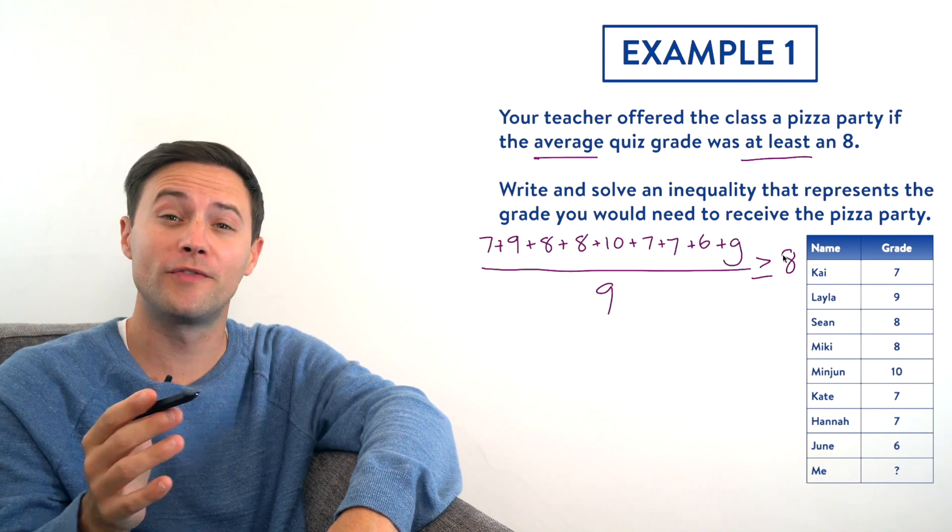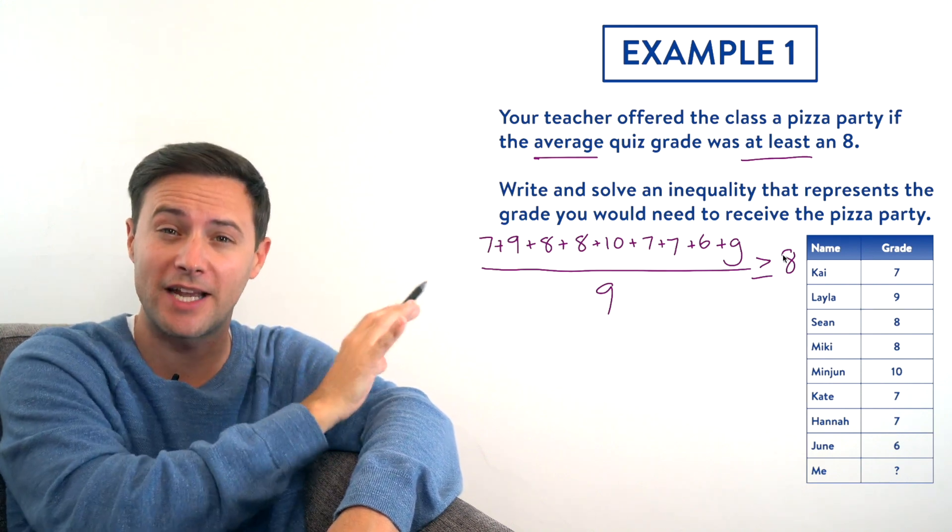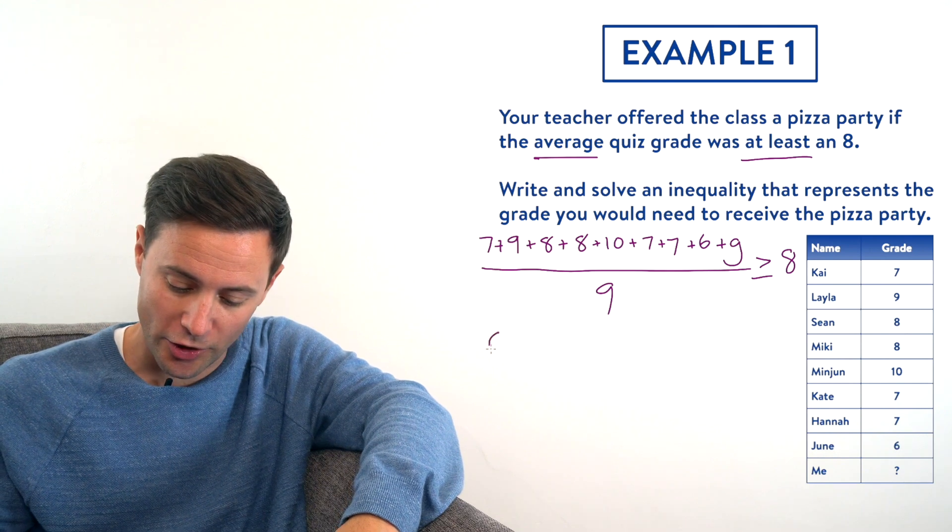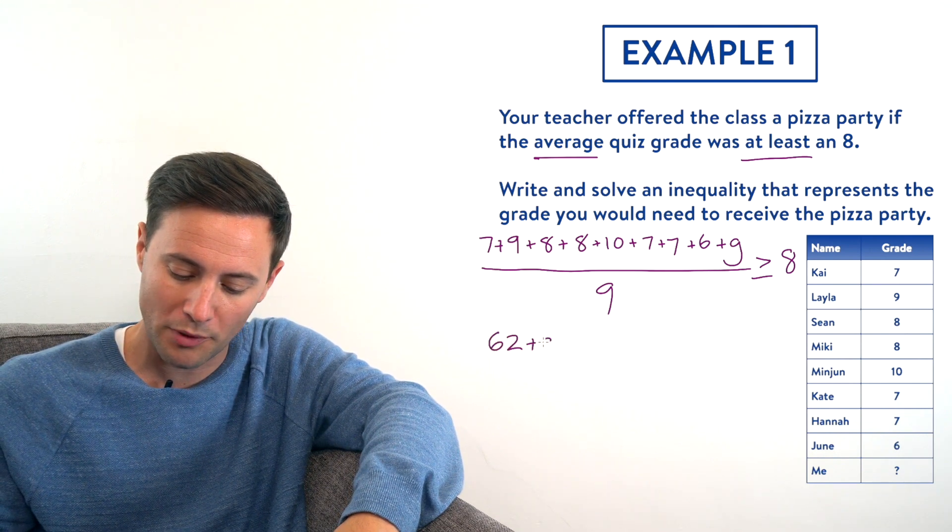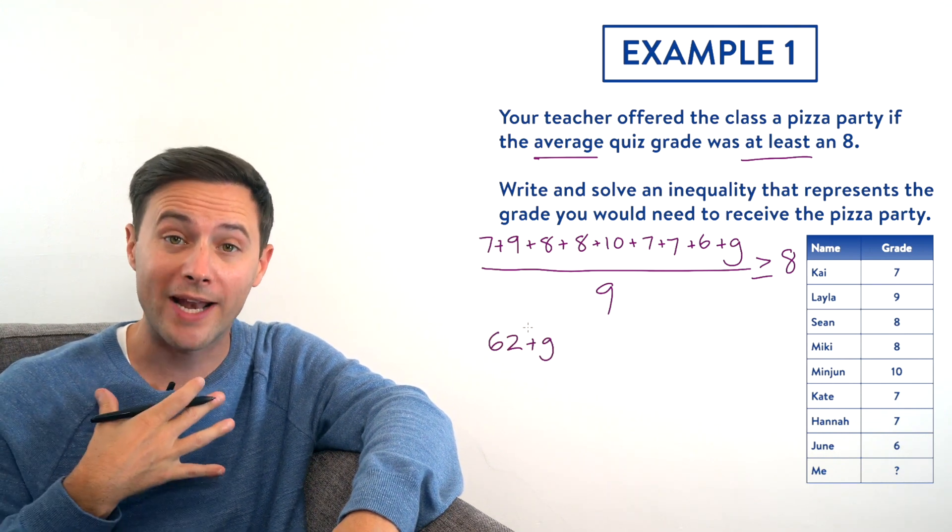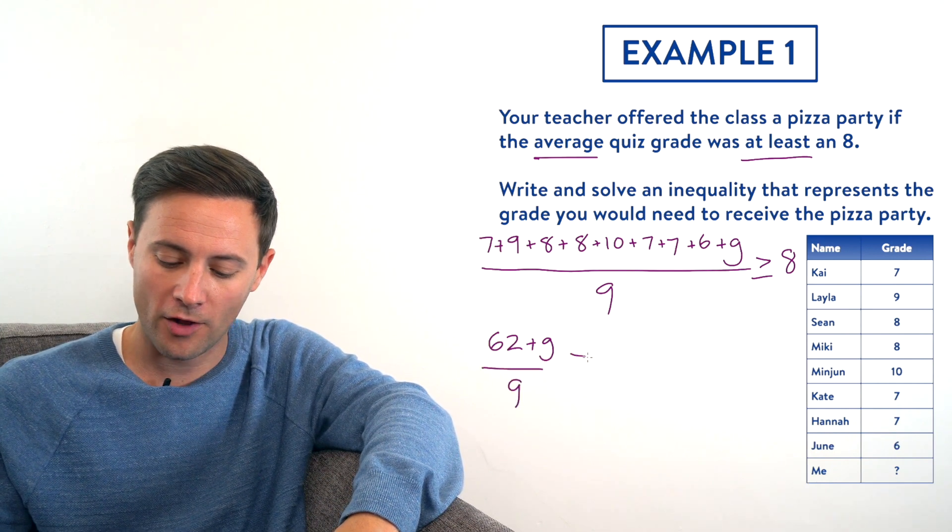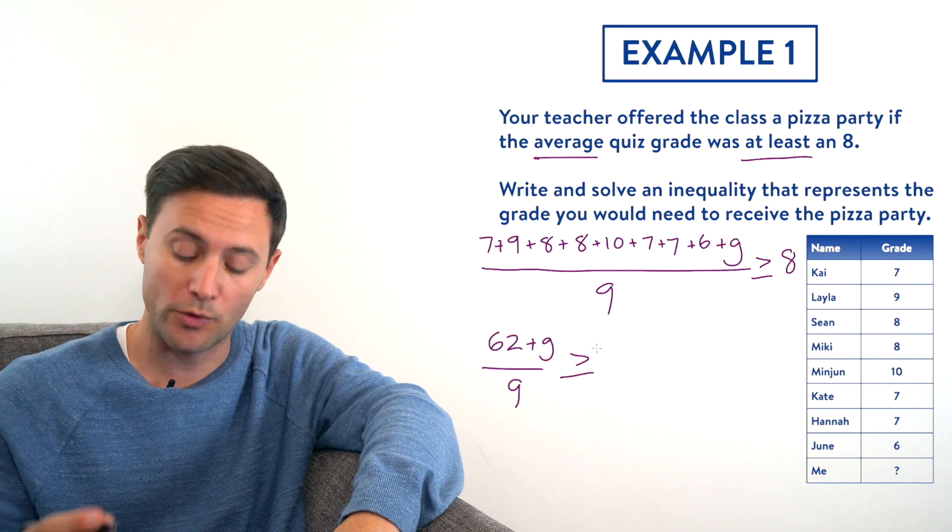We can add all of your classmates' grades together first. Let's do that, and hopefully you got 62. So now we've got 62 plus G, whatever grade I got on the quiz, divided by 9. All of that has to be greater than or equal to 8.